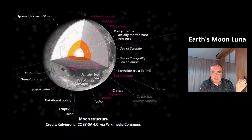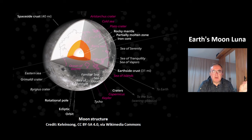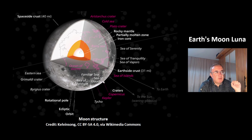This is the internal structure of the Moon. You can see the crust, the rocky mantle, and the iron core. The iron core is surrounded by a partially molten stone.